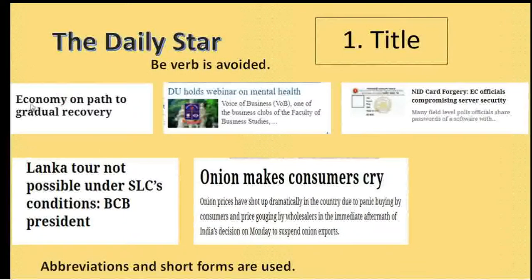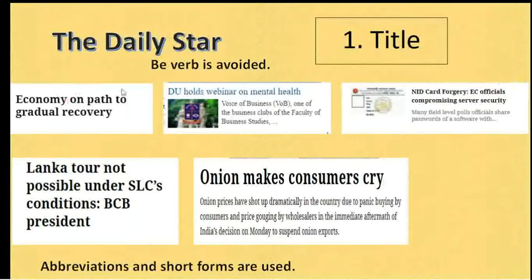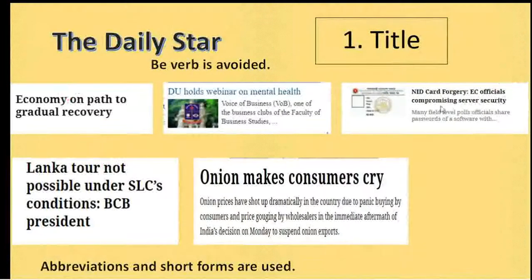The first title is 'Economy on path to gradual recovery.' Actually, the be-verb is omitted here. The full sentence is 'Economy is on path to gradual recovery,' but the be-verb 'is' has been omitted. Look at this title: 'NID card for jury, EC officials compromising server security.' Actually, the full sentence is 'EC officials are compromising server security.' So here, the be-verb is omitted.